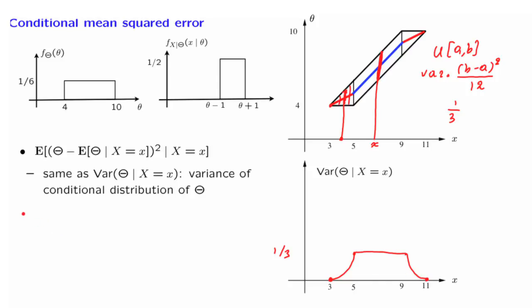In case we're now interested in the overall mean squared error, then we have to calculate the average of this conditional variance, where the average is taken over all values of x.